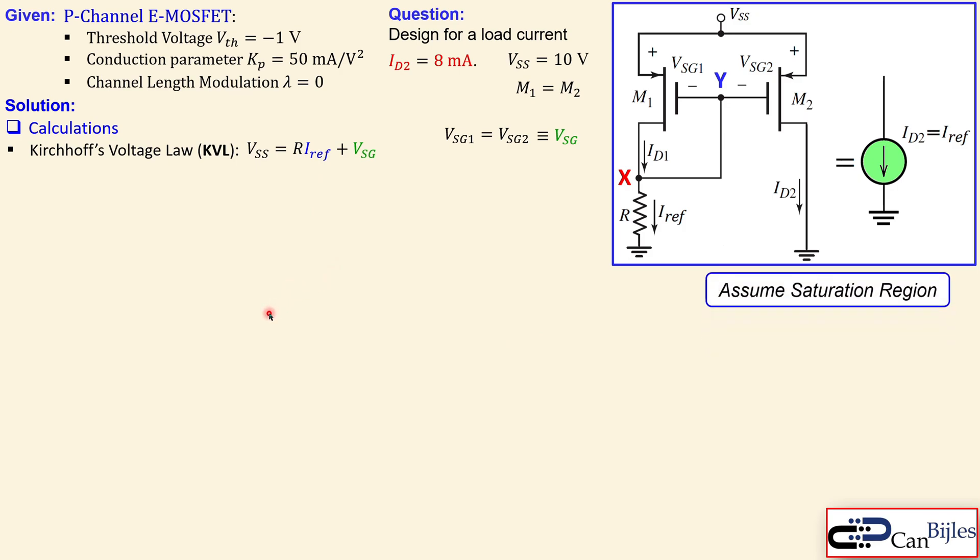The assumption here is saturation region operation for the drain current. For P-channel MOSFETs, VSG must be at least in the absolute sense larger than the threshold voltage, and VSD must be larger or equal to VSG plus the threshold voltage. We will check this later.